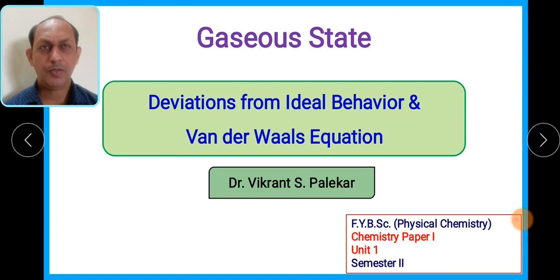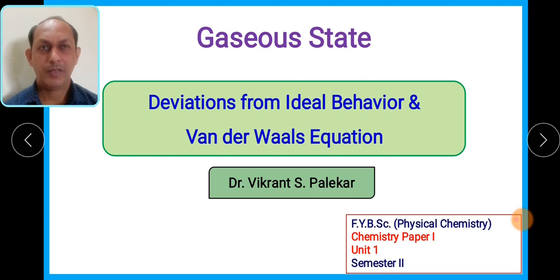This is the fourth session we are doing on this particular topic. Till now we have understood the different gaseous laws which can be utilized in order to study the different characteristic properties based upon their different parameters such as pressure, volume, and temperature. In that we have seen Boyle's law, then Charles' law and Avogadro's law.